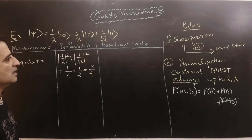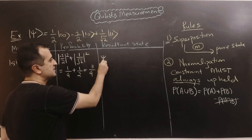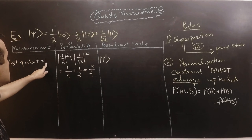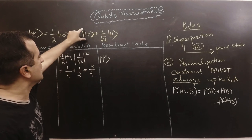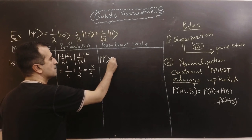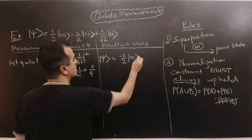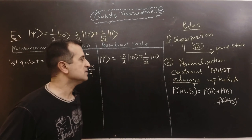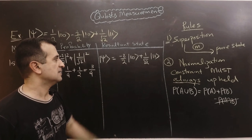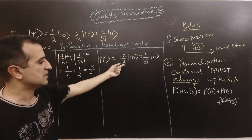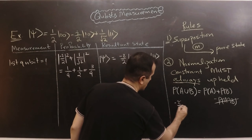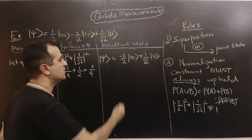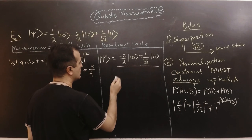The resultant state depends on both rules. Rule one says after measurement the qubit changes from superposition to pure state. Since the first qubit was measured as one, the resultant state is a combination of the two possibilities where the first qubit equals one. We also check rule two: the resultant vector must be normalized. The current vector is not normalized, so we divide it by its norm, which is the square root of the probability.